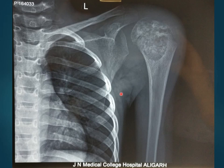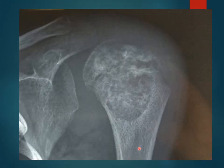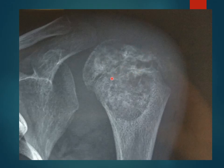This is the X-ray of the same patient — left shoulder AP view — showing a lesion in the proximal part of the humerus. On closer look, the lesion appears lytic in nature. We have a very well-defined, lytic, expansile lesion involving the epiphysis and also extending into the metaphysis.